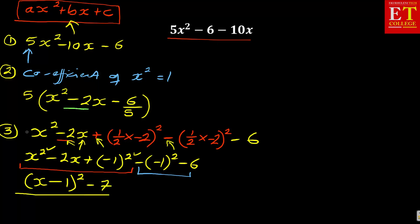Looking at all of this carefully, you will notice that in the beginning I left out the 5. So throughout all of these steps, you have your 5 outside. The 5 maintains throughout because it is multiplying everything inside the bracket.